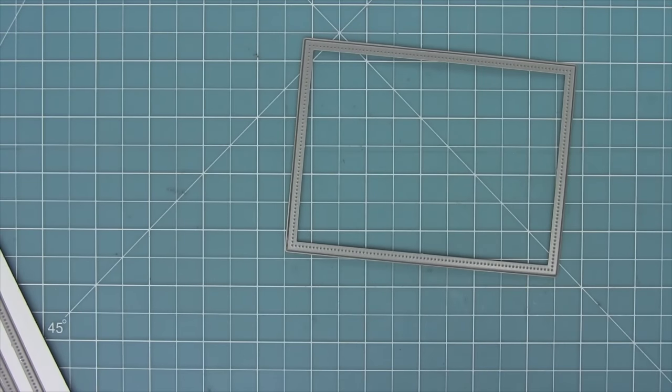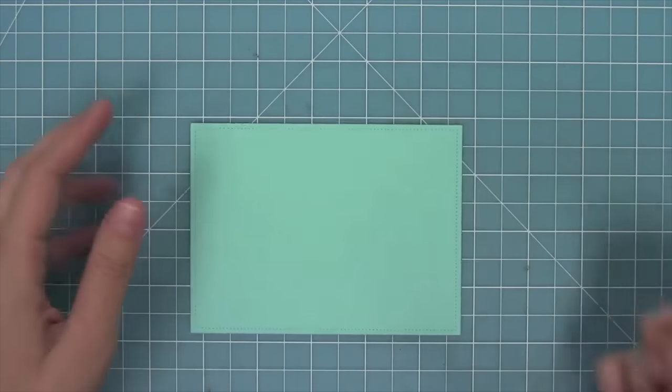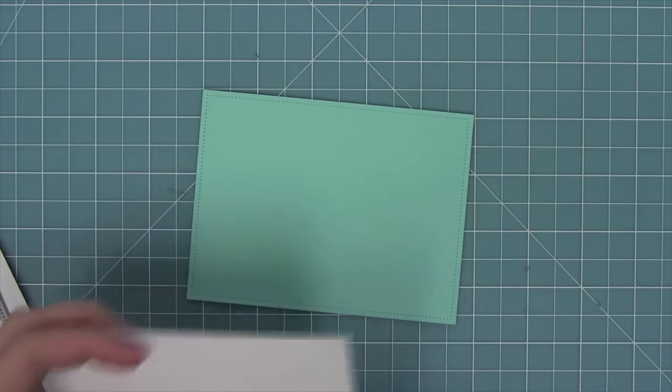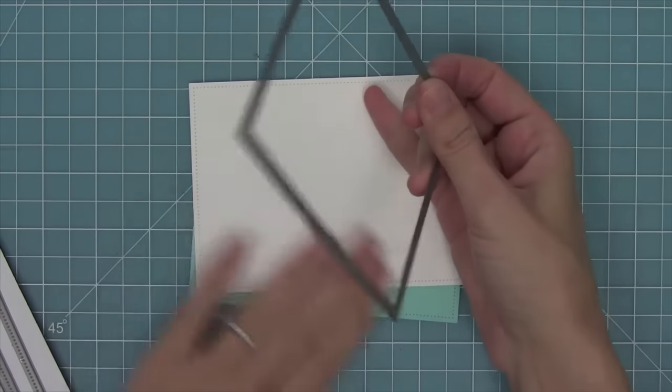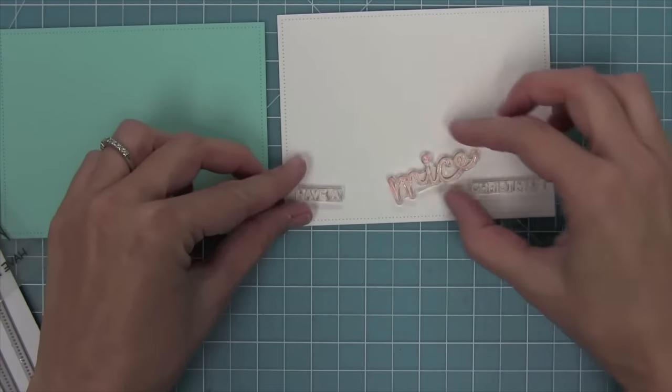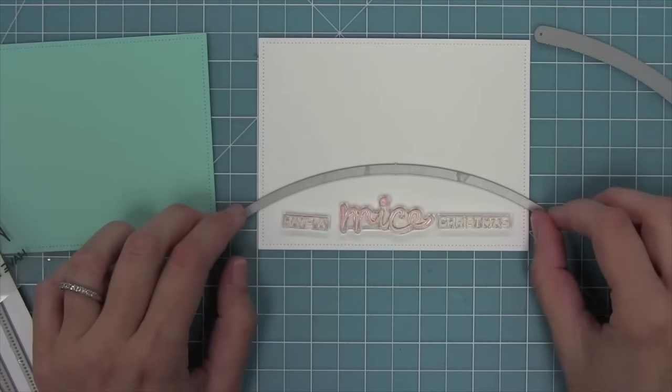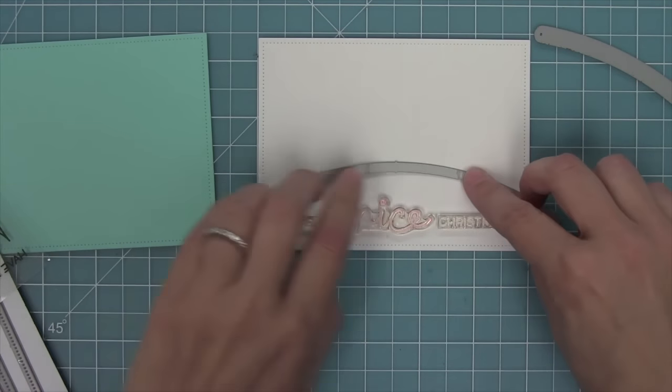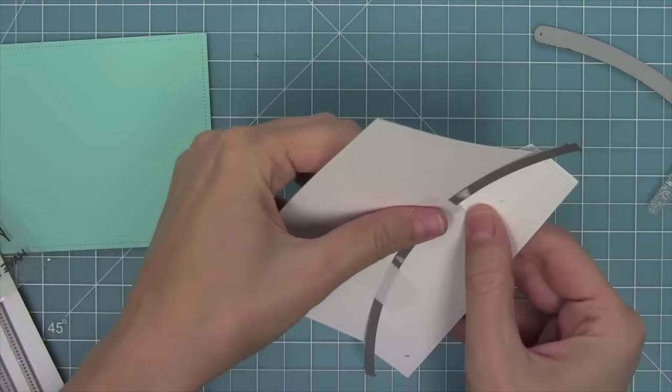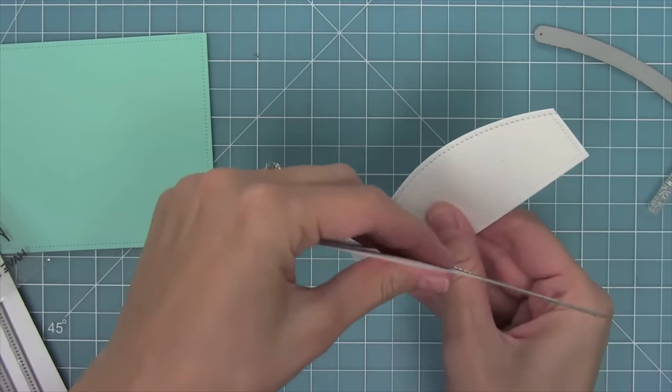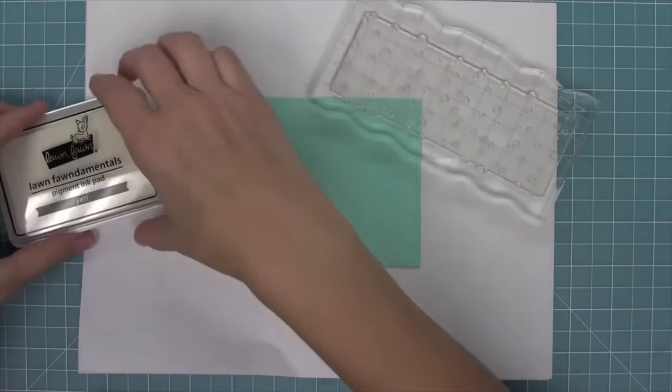I'm using a dotted rectangle die here and I'm going to be cutting some mermaid cardstock and also some white cardstock to start creating my little snowy scene for these mice. I'm laying out my Have a Mice Christmas sentiment here so that I know where to put my simple stitched hillside border. I'm going to hold that in place with some low tack tape and run it through and now I've got a little stitched snowy hill.